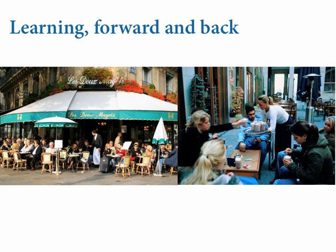To do otherwise would be to commit yourself to anterograde amnesia and live the life of the goldfish. All the models we have looked at so far in the course are goldfish — they have anterograde amnesia. As they move from one cluster — an academic department, an individual, nations — to another, they don't use any information from the other clusters to improve estimates of the one they're in. And all those clusters have finite samples, so there's a pooling of information available that can improve estimates for the whole collective of parameters.